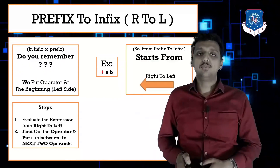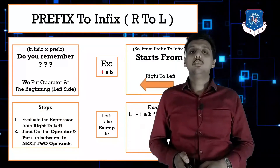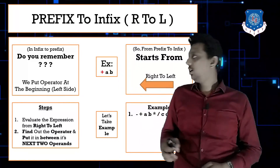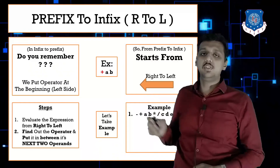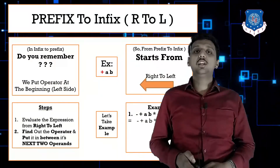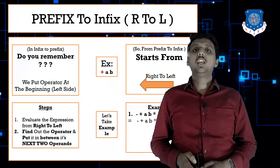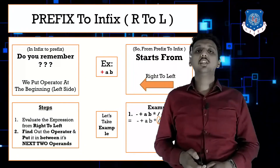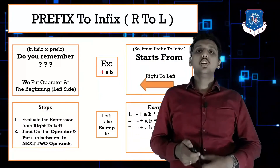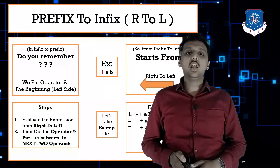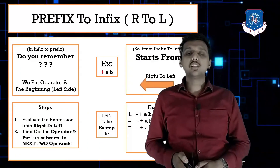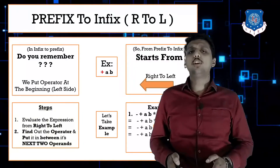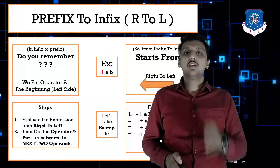Example 1 prefix: -+ab*÷cde. Go right to left — I find division first. Put division between its next two operands c and d: (c/d). Going right to left again, I find star. Put star between (c/d) and e: (c/d)*e. Then going right to left, I find plus. Put plus between a and b: (a+b).